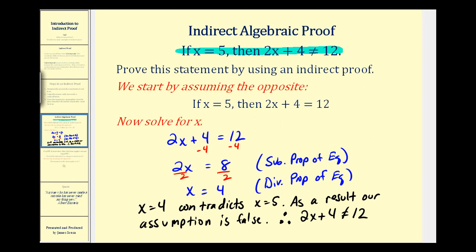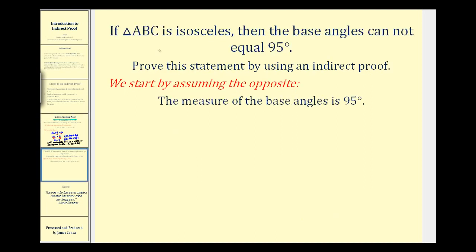Let's take a look at another example. If triangle ABC is isosceles, then the base angles cannot equal ninety-five degrees. Again, we want to prove this statement by using an indirect proof, so we'll start by assuming the opposite. Well, the opposite would be that the measure of the base angles is ninety-five degrees.